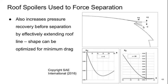Coming back to the idea that if you have to deal with a critical angle, you can use a roof spoiler to force a separation. This sharp edge forces the flow to separate and also increases pressure recovery before the separation by giving the flow a more favorable pressure gradient on the top surface, effectively extending the roof. You can optimize the spoiler shape to minimize drag — there is an optimum spoiler height for lowest drag, and in terms of length, moving it forward produces a very minor effect with a small potential drag reduction at some positions.